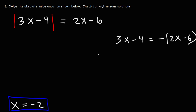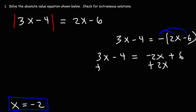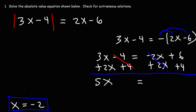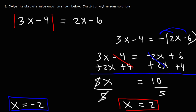For the second equation, distribute the negative sign to get negative 2x plus 6. Add 2x to both sides to get 5x on the left, and add 4 to both sides: 6 plus 4 is 10. Dividing both sides by 5 gives x equals 2, our second potential solution.